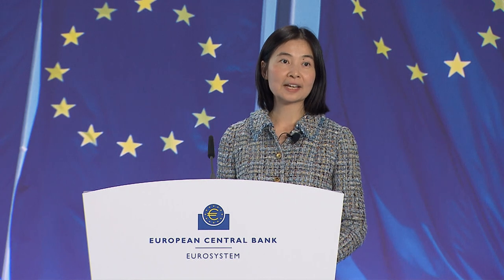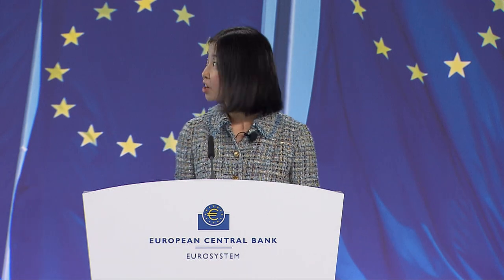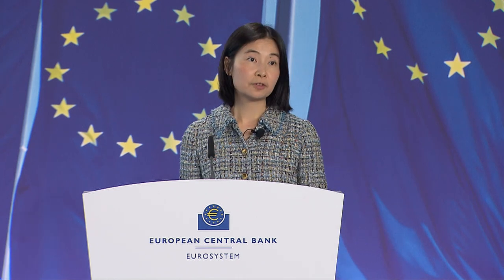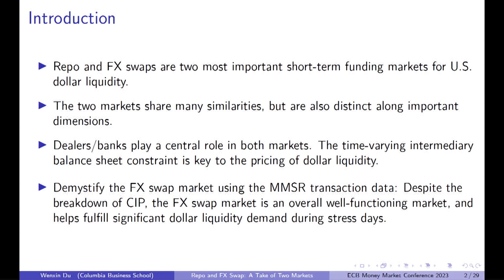A very important commonality between the two markets is that dealers and banks play a central role in both markets. In particular, the time-varying intermediary constraint from post-crisis regulation is the key driver of pricing in both markets. A big part of this talk is also to demystify the FX swap markets. We'll make use of the MMSR — the Money Market Statistical Reporting transaction data collected here at the ECB. A central message is that despite the breakdown of the no-arbitrage condition called covered interest parity, the FX swap market is overall a very well-functioning market, serving a very important function of fulfilling significant dollar demand during stress days, particularly reaching market participants who do not have ready access to cash market funding alternatives.